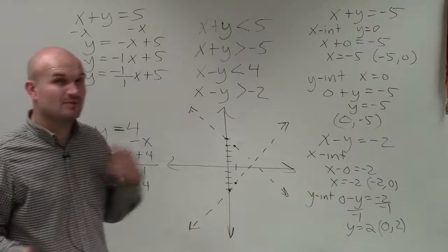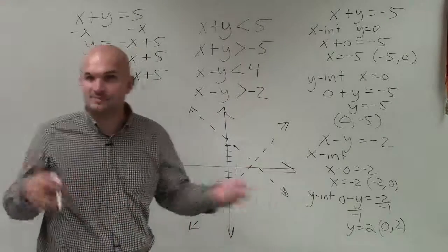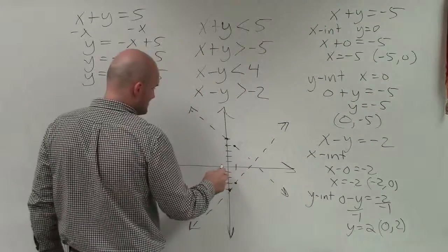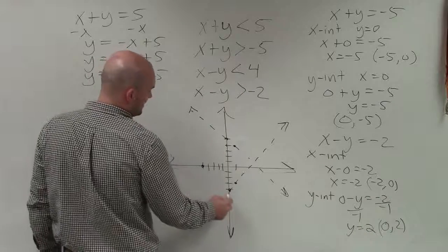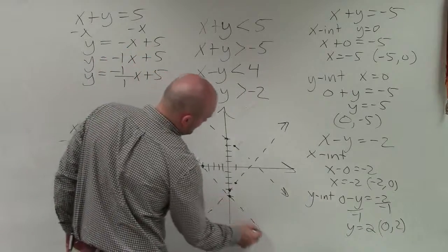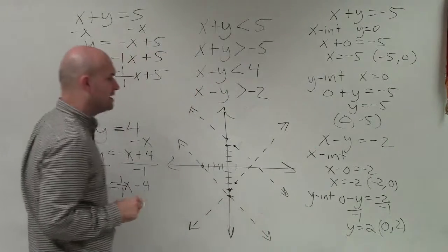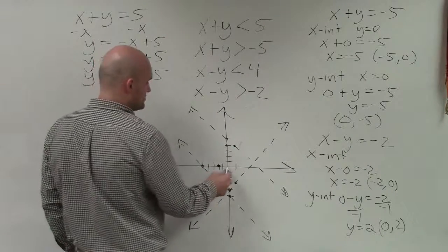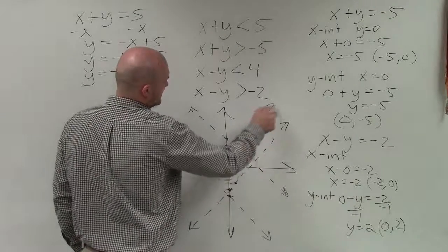With the intercept method, we just plot the two intercepts and connect them. For equation 3, the x-intercept is at negative 5 comma 0 and the y-intercept is at 0 comma negative 5 — draw a dashed line. For equation 4, the x-intercept is negative 2 comma 0 and the y-intercept is 0 comma 2 — draw a dashed line.